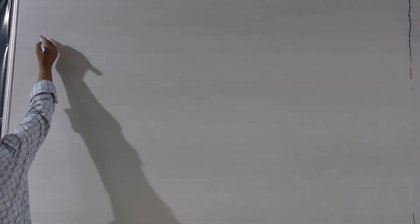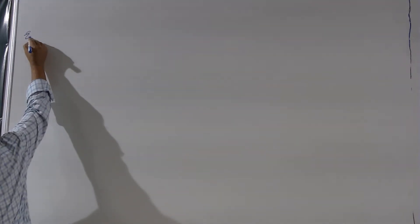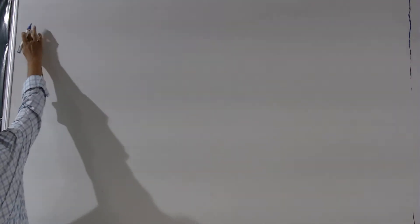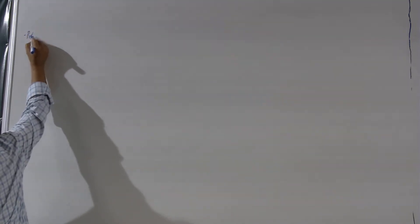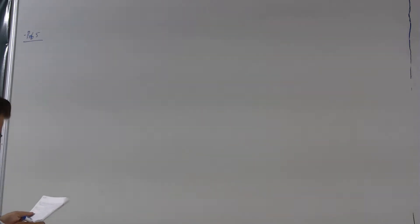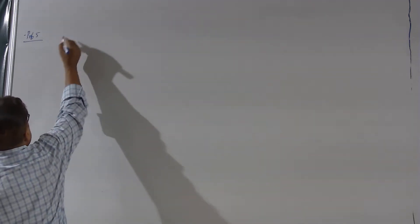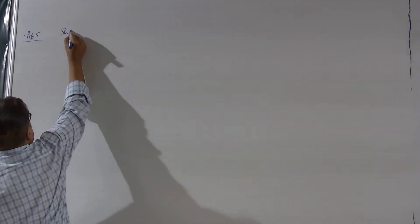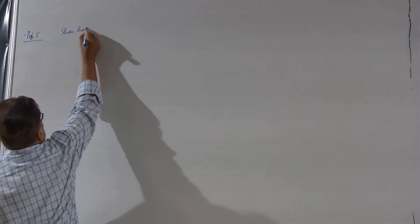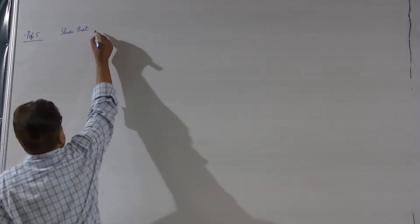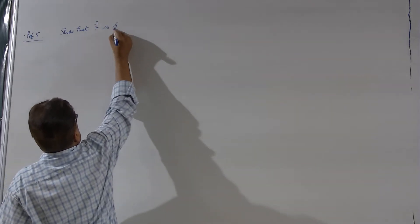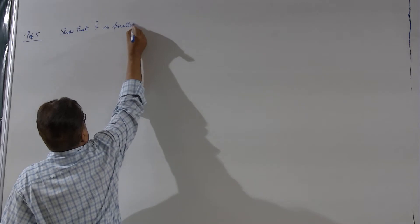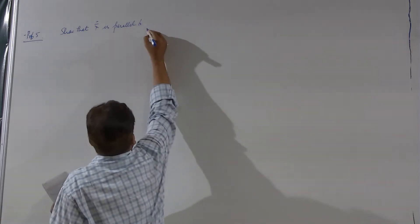We have a few more problems. This is problem number 5: show that the vector r double dot is parallel to the osculating plane.